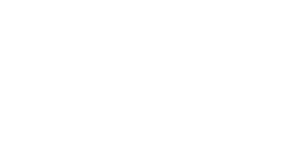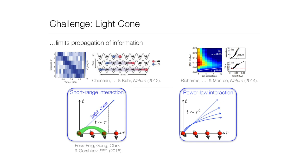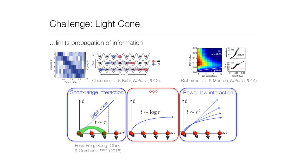So what would it take to build these types of systems in the lab? If you want information to spread exponentially quickly across all degrees of freedom, one thing you don't want is interactions of the type usually found in nature that decay with distance. If I just have nearest neighbor interactions in some spin chain, the time for information to spread will grow linearly with system size. The question is: are there systems one could build where that sense of locality breaks down, or where information can spread exponentially quickly?